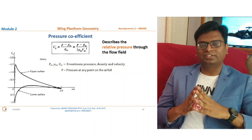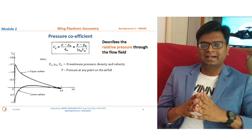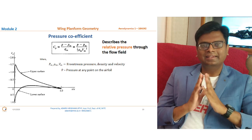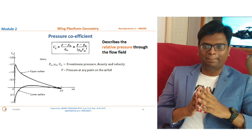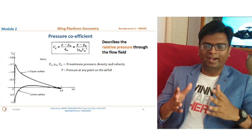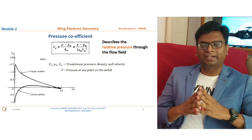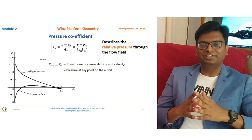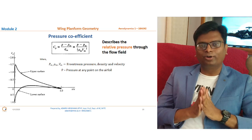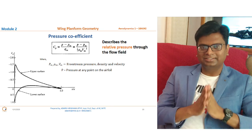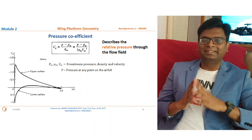On the x-axis we have x/c rather than just c. Here, x is the distance from the leading edge measured in the direction of the chord, and c is the chord length. There is a possibility of replacing x/c with just c, but why are we using x/c? You can pause and think about it, or write your answer in the comment section below.